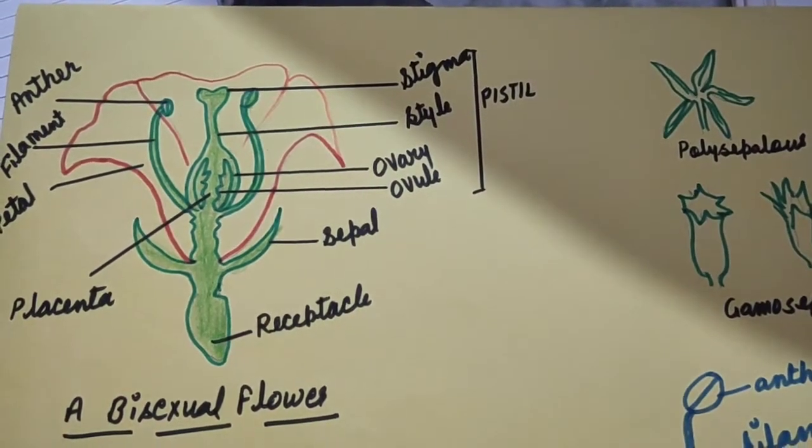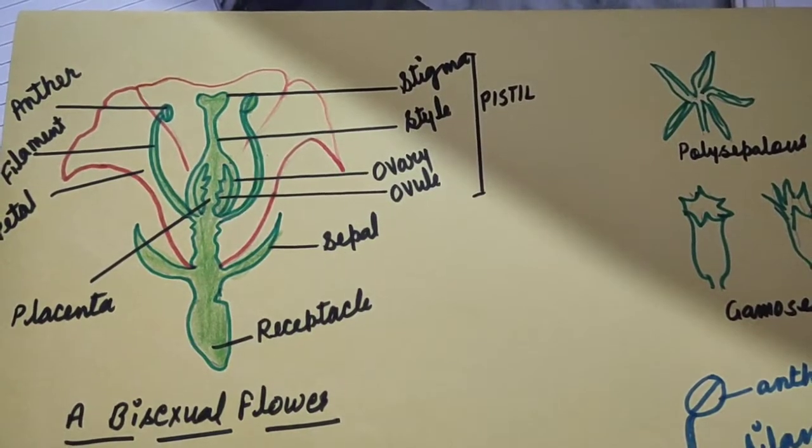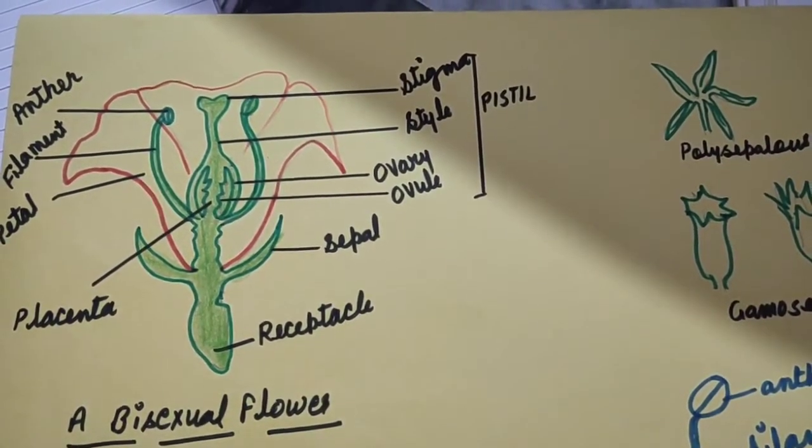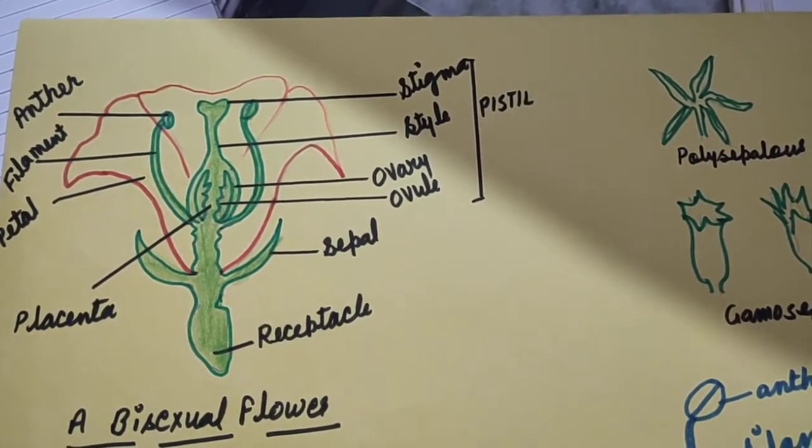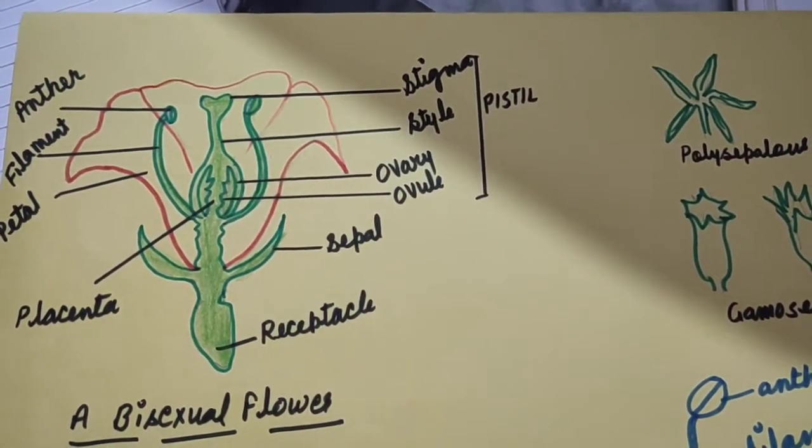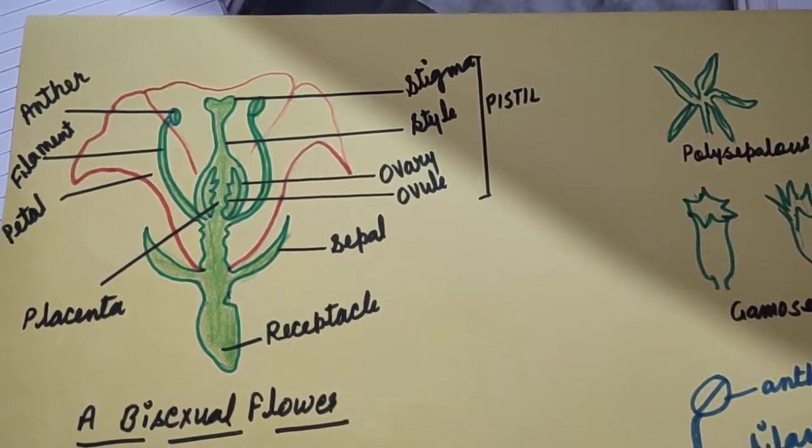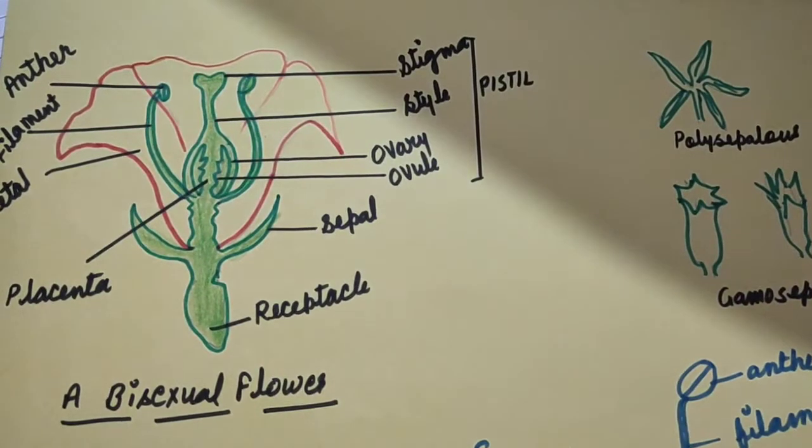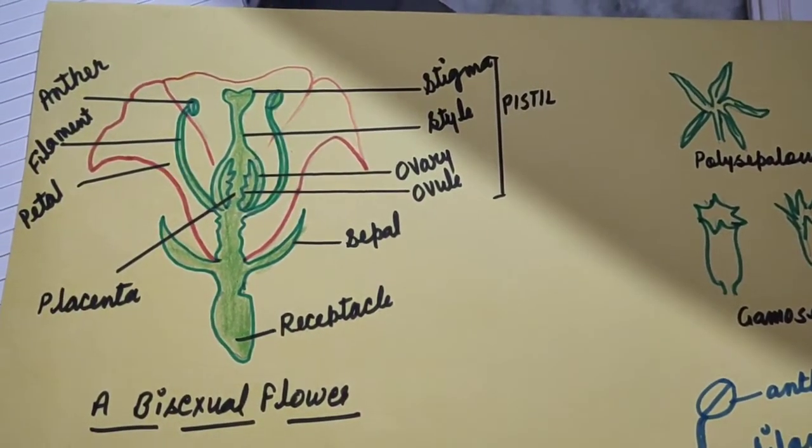Hello dear students, good morning. We have already started chapter 3, the flower. And in previous video we learnt the structure of flower: bract and male flower, female flower, bisexual flower and neuter flower. In today's video we will see the general description of the floral parts.